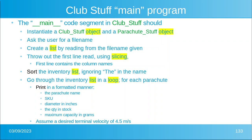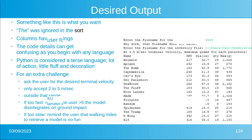Let's assume a desired terminal velocity of four and a half meters per second. This is what the output should look like — the columns have headings. Python is considered a terse language; there's very little fluff and decoration, so it might get confusing as you start, just like with any language. For an extra challenge, ask the user for the desired terminal velocity and only accept values between two and five — outside that range, remind the user that he's screwing up, as you see on the screen.